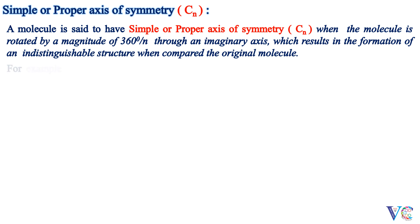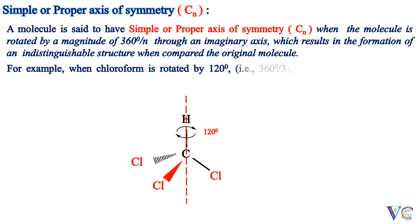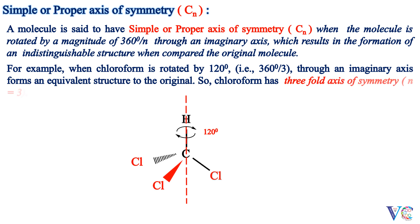For example, when chloroform is rotated by 120 degrees — that is, 360 degrees divided by 3 — through an imaginary axis, it forms an equivalent structure to the original. So chloroform has a three-fold axis of symmetry, that is, n equals 3.